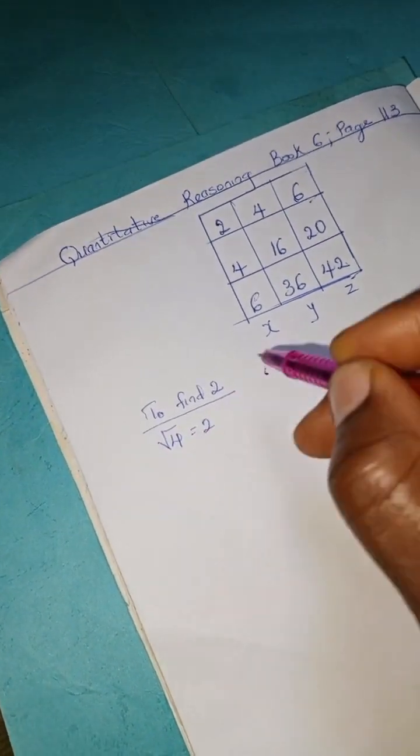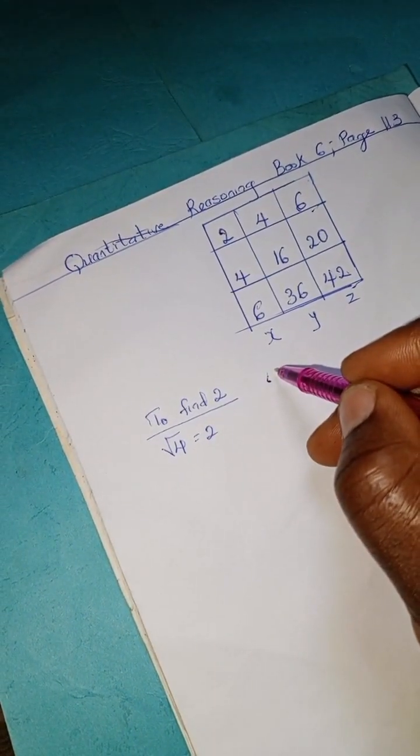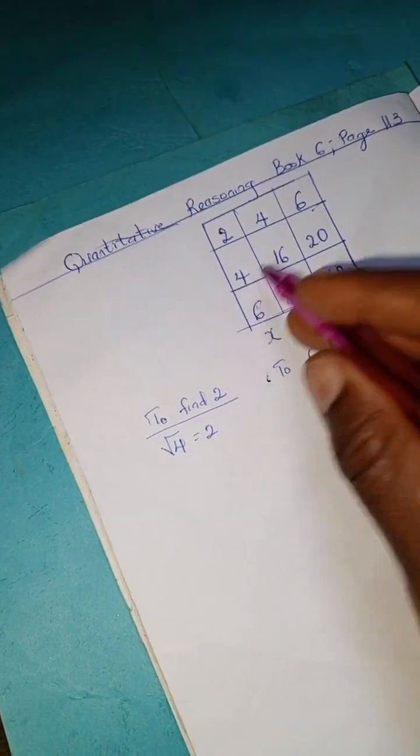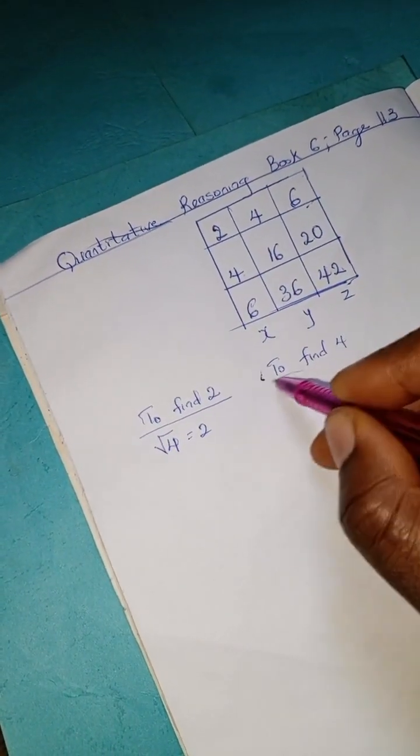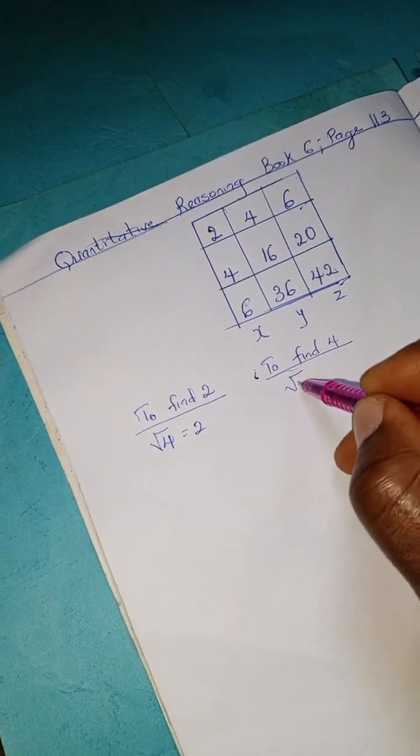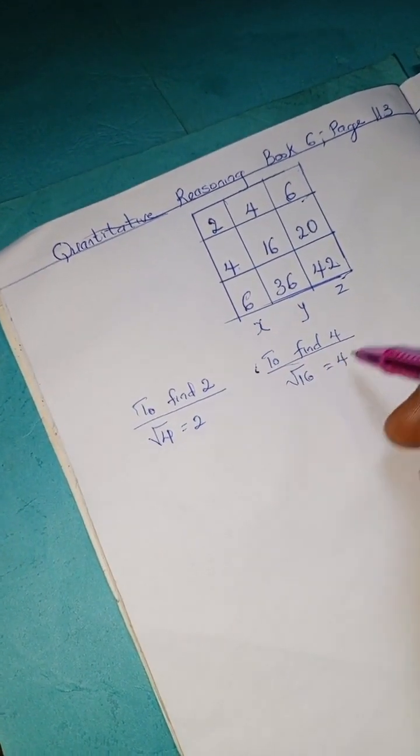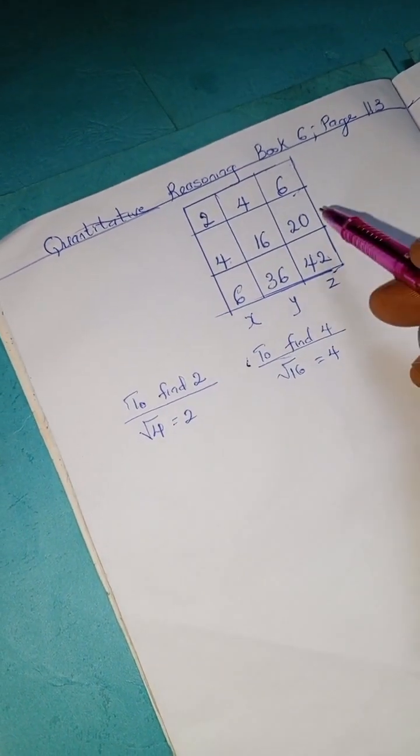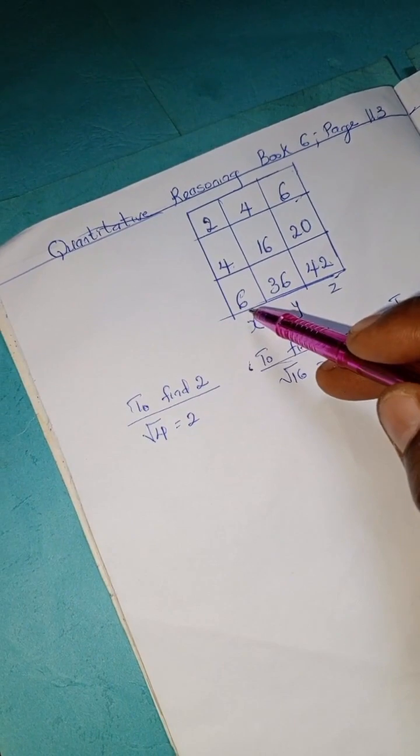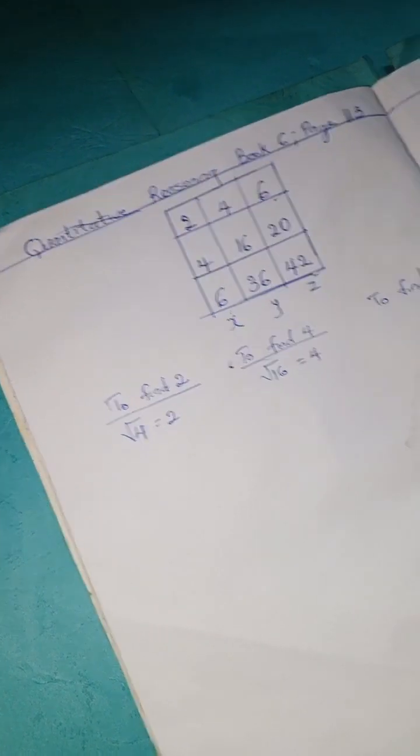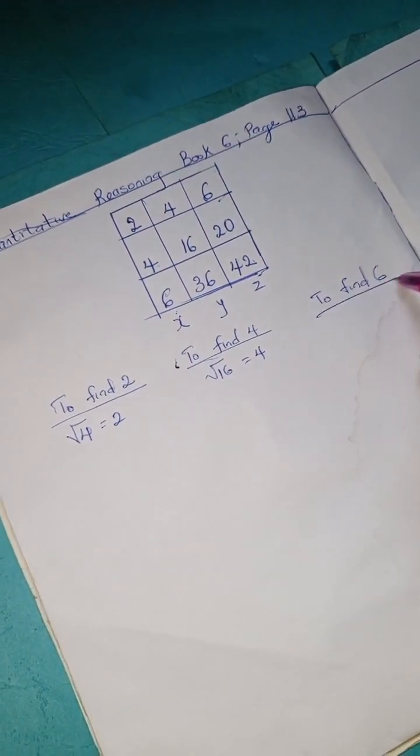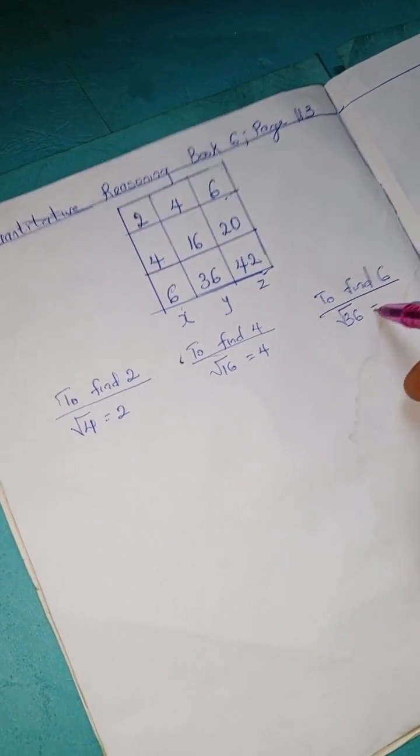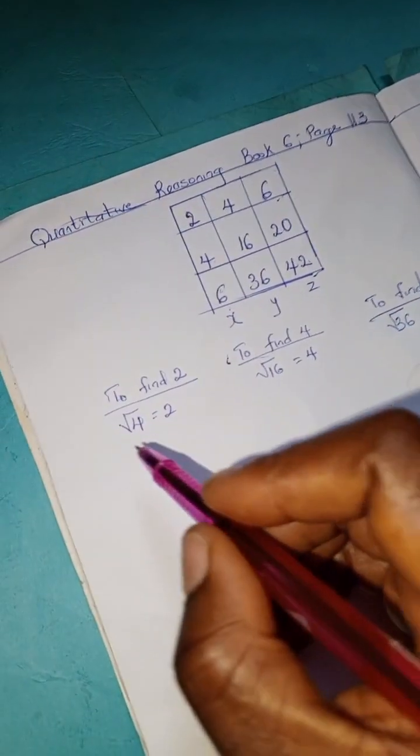You have square root of 4 equals 2. We're going to find the next: find 4. Square root of 16 is 4. To find 6, we're going to have square root of 36, we have 6.